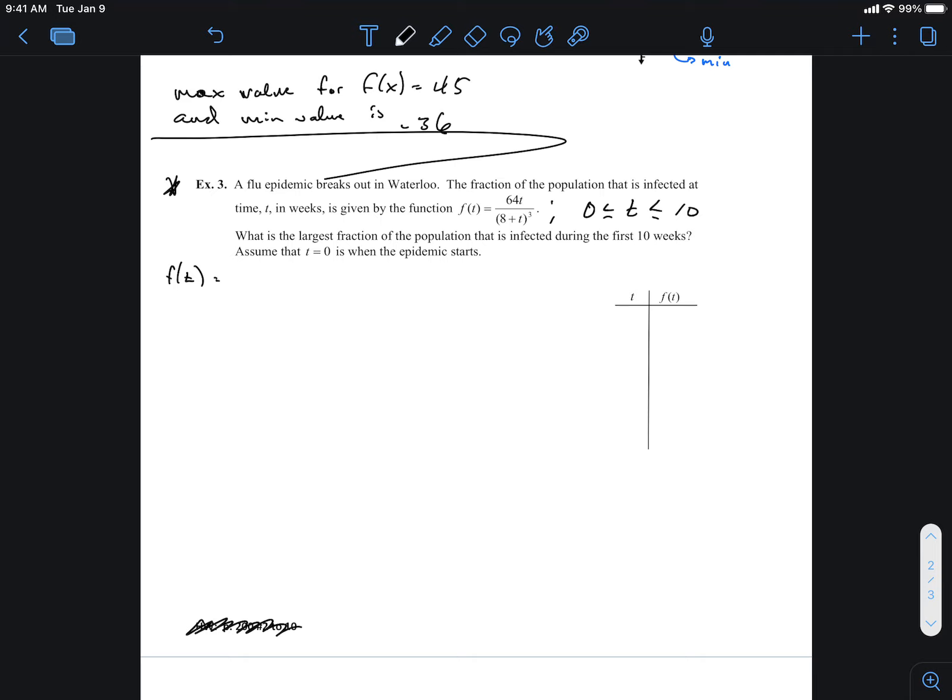So, you know, if you prefer one over the other, in some situations it might be better to do one over the other anyway. So what we say here is I could rewrite this f of t function as being 64t multiplied by, I could multiply this by 8 plus t to the negative 3. I could bring that up to the numerator. Now, I just have a product rule. Well, product rule tells us to derive the first one. The derivative of the first one is 64 and multiply by the second one.